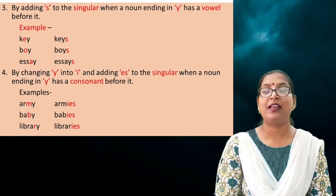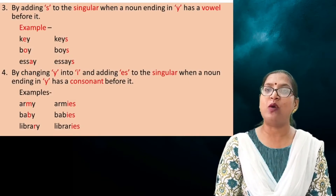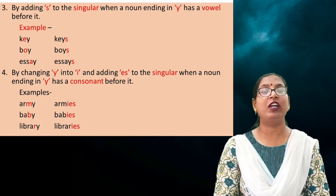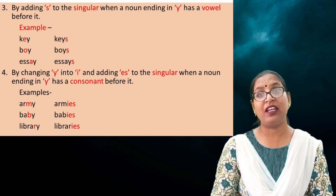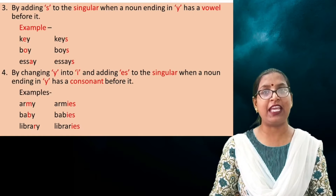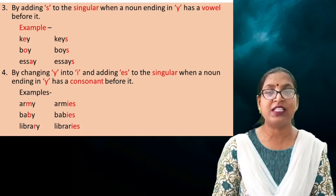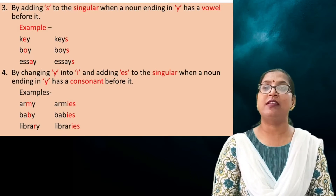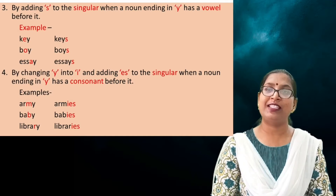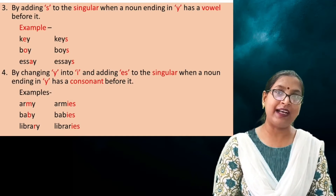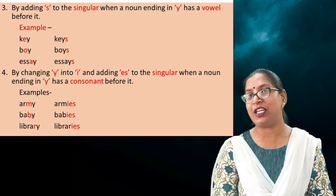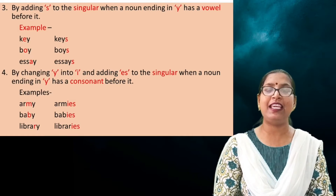Rule number three: by adding ES to the singular when a noun ending in Y has a vowel before it. Dear children, if your word is ending in Y and before Y any vowel comes — vowels are A, E, I, O, U — in that case we just add S with the word. For example, 'key' — the last letter is Y and before Y comes the vowel E, so we add S: 'keys' — K-E-Y-S.